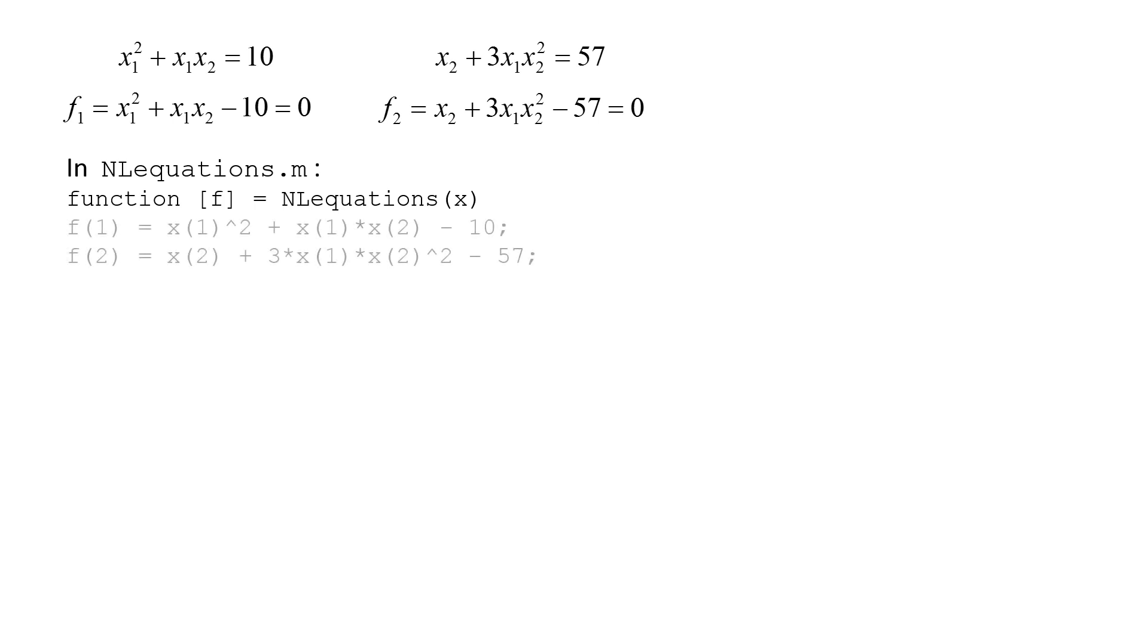Next, f1 and f2 are calculated. f of 1 equals x of 1 squared plus x of 1 times x of 2 minus 10. f of 2 equals x of 2 plus 3 times x of 1 times x of 2 squared minus 57.